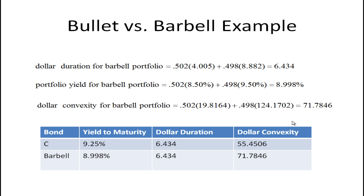Let's take a look at how you calculate those. Dollar duration is just a weighted average of the dollar durations of the two bonds. Bond A had a dollar duration of 4.005, Bond B had a dollar duration of 8.882, giving a combined dollar duration of 6.434 — the same as the bullet strategy.